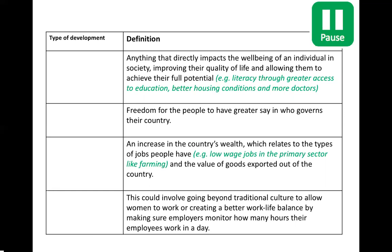The second definition: freedom for people to have a greater say in who governs their country. The third: an increase in the country's wealth, relating to the types of jobs people have — for example low-wage jobs in the primary sector like farming — and the value of goods exported out of the country. The fourth and final one: this could involve going beyond traditional culture to allow women to work, or creating a better work-life balance by making sure employers monitor how many hours their employees work in a day.